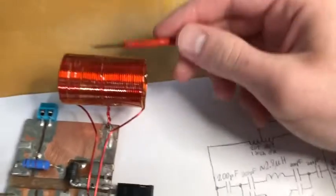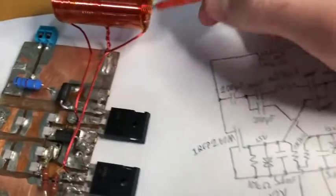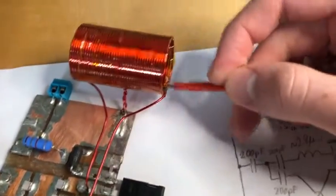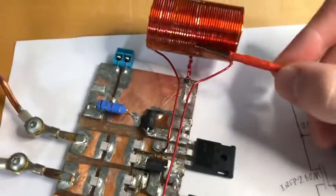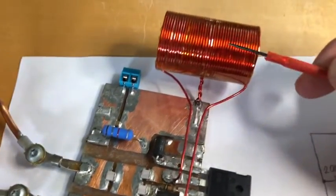The choke, which you can see here, is just 40 turns center tapped on around a 1 inch diameter coil. And this is, I think, 18 gauge magnet wire. And it works great. It doesn't get hot or anything.